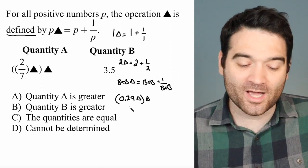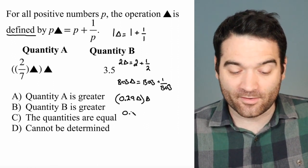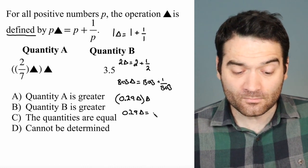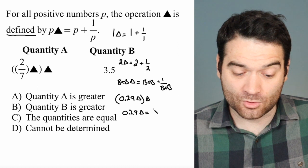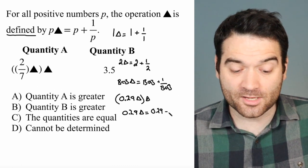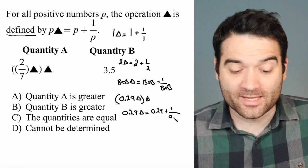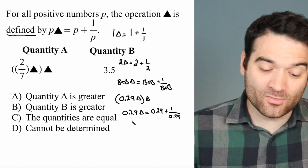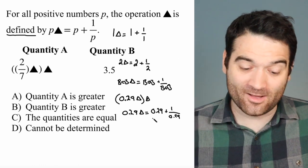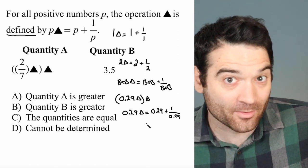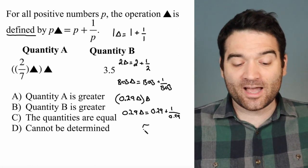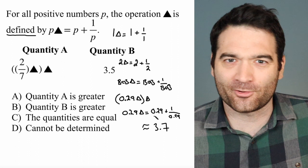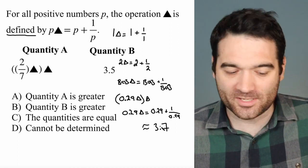So 0.29 triangle is going to equal, I'll write this out again, 0.29 triangle is equal to 0.29 plus 1 over 0.29, right? And when we do that, when we calculate this out, this is 0.29 plus 1 divided by 0.29, again on your calculator, please. This comes out to roughly something like, I think it's like 3.7. Again, do the math on your own. Just type it into your calculator. It comes out to about 3.7.